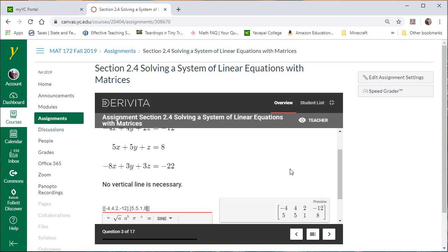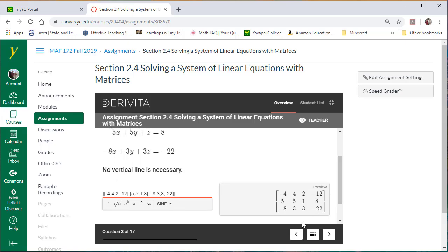To put in the third row, I'm going to use my arrow key to move over, type a comma and another set of square brackets, and then put the coefficients in for that particular equation. So negative eight comma three comma three comma negative twenty-two. Scroll down and there you can see we have a three by four matrix where each one of the equations matches up with a row in the matrix.